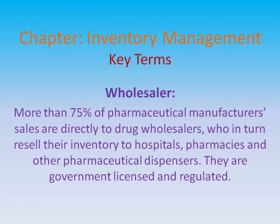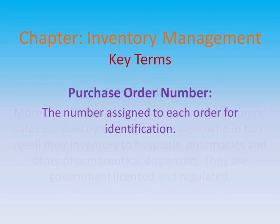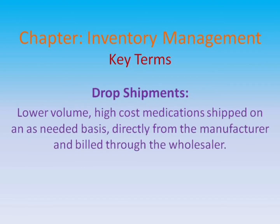Wholesaler: more than 75% of pharmaceutical manufacturers' sales are directly to drug wholesalers, who in turn resell their inventory to hospitals, pharmacies, and other pharmaceutical dispensers. They are government-licensed and regulated. Purchase order, or P.O. number: the number assigned to each order for identification. Drop shipments: lower volume, high-cost medications shipped on an as-needed basis, directly from the manufacturer and billed through the wholesaler.